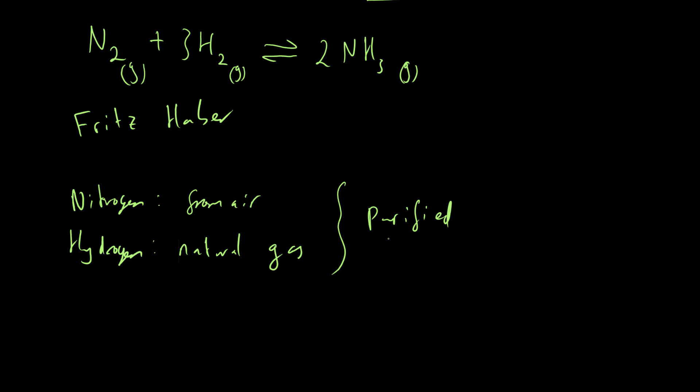This reaction is carried out in very specific conditions. We have a high temperature - around 400 to 450 degrees Celsius. High pressure - you're looking at 200 atmospheres, that's 200 times atmospheric pressure. And we need a catalyst, and that catalyst is iron (Fe), which is the chemical symbol for iron.